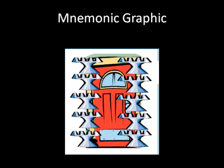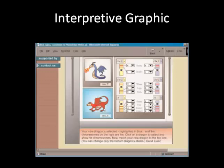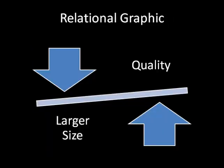Here's the mnemonic graphic I mentioned earlier — you have ten objects standing up around a door, so 'ten door' to help you understand the Spanish word 'tenedor.' Then here's an example of an interpretive graphic — a simulation where learners can manipulate different genes of dragons to help them understand how genes work together in science. And remember this relational graphic that helped you understand specific aspects of relationships with data — the higher the quality, the larger the file size.